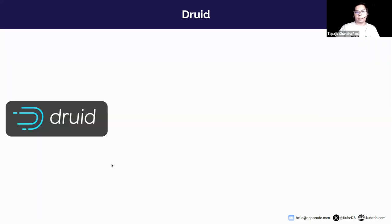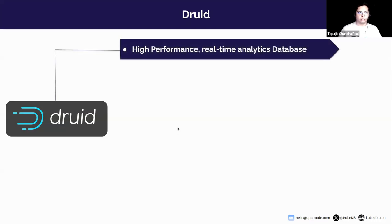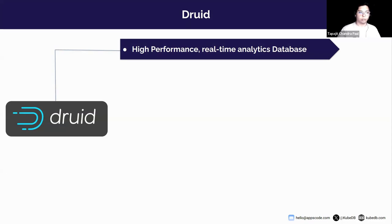Druid is a high-performance, real-time analytics database that delivers sub-second queries on streaming and batch data at scale and under load. It is most often used for use cases where real-time ingestion, fast query performance, and high uptime are very important.